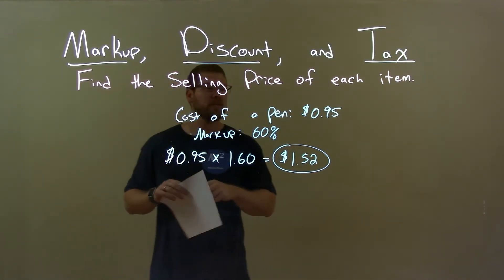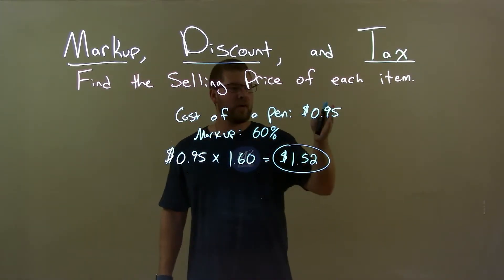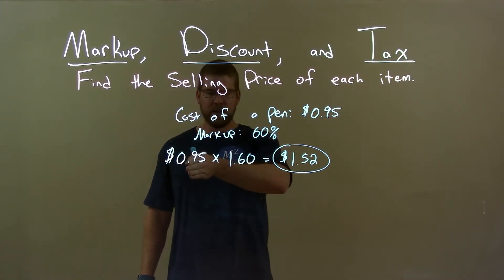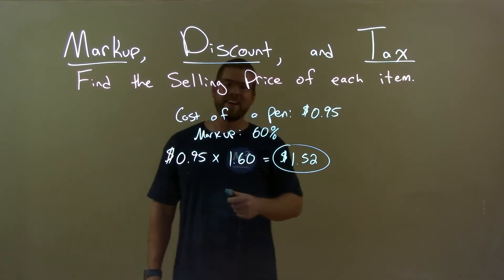Quick recap. We're given the cost of a pen is 95 cents, and its markup is 60%. Well, we take the cost, 95 cents, multiply it by 1.60, and get our final answer of $1.52.